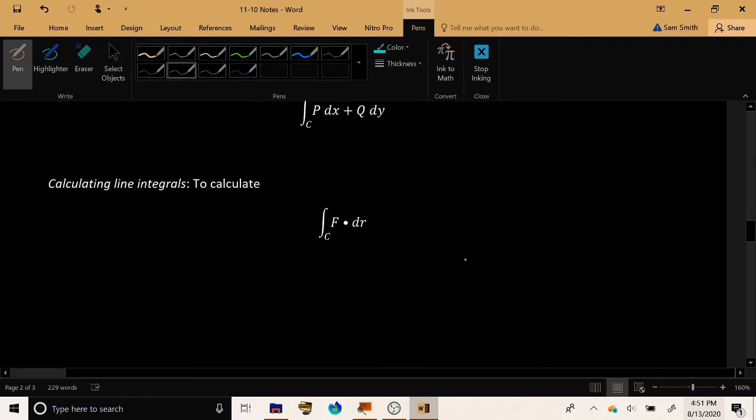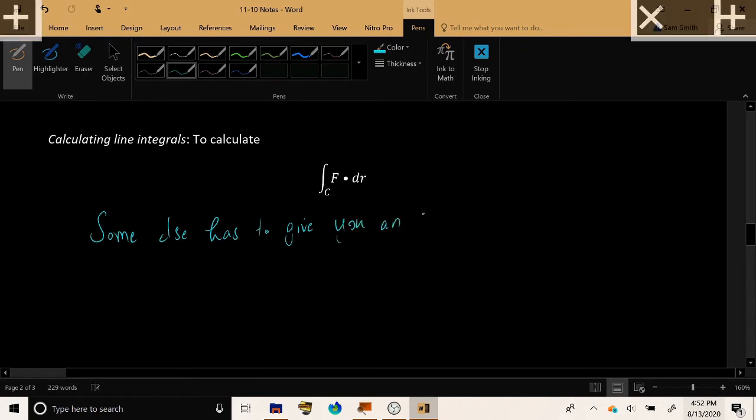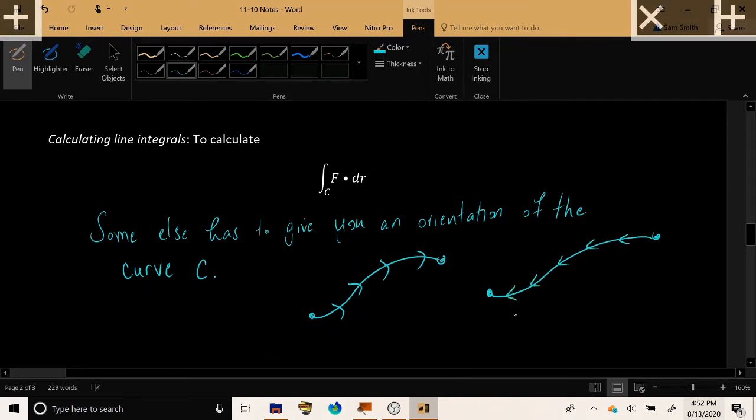Now, having established what the notation looks like, let's talk about how to actually calculate the line integral. Now the first note is someone else has to give you an orientation of the curve C. The line integral's value changes depending on different orientations. If someone decides that you should traverse your curve C in the forward direction, and someone decides that they're going to traverse their line C in the backward direction, these will have opposite line integrals. C forward, C backward. These will have opposite vector line integrals.